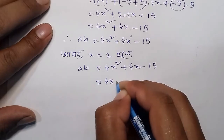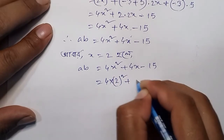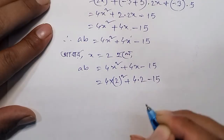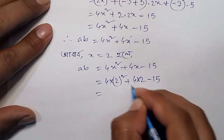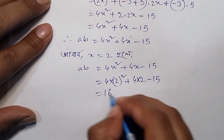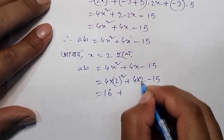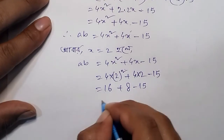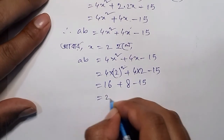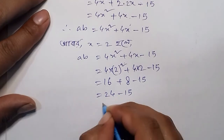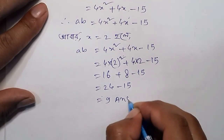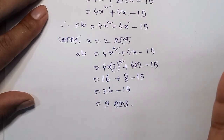Here 4 into 2x squared plus 4 into 2 minus 15, gives us 24 minus 15, which equals 9. So the final answer is confirmed.